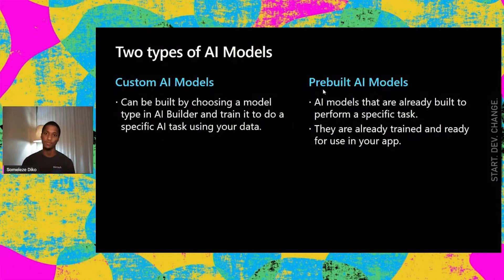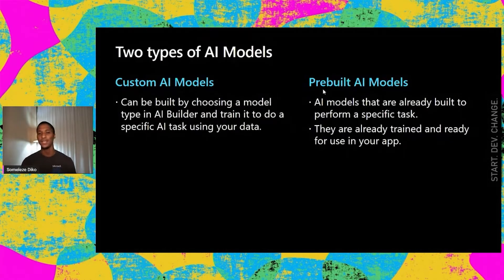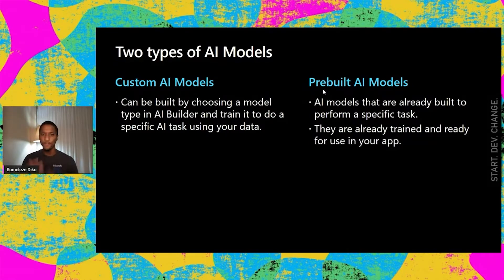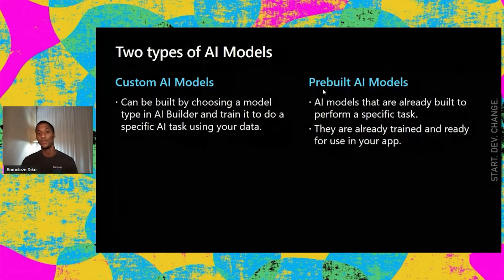We have two different types of AI Builder: custom models and pre-built AI models. I'd like you to think of custom models like getting a new puppy — you have to actually train it to know how to bark whenever there's something wrong in the house, whenever there are burglars. That's how custom AI models work. You have to build your model and train it so it can perform your specific AI task using your own data.